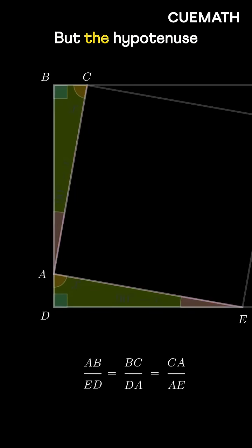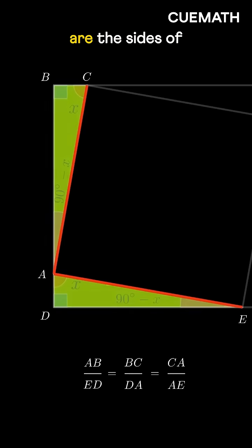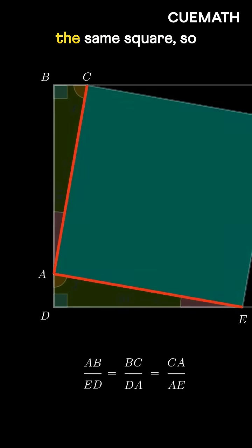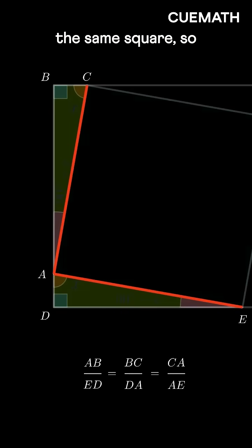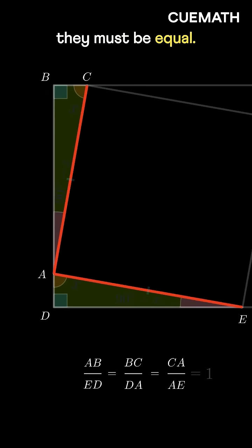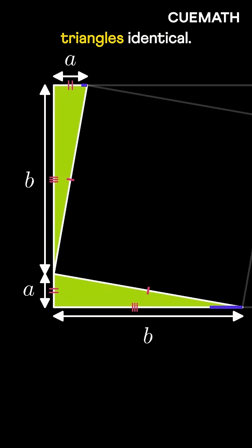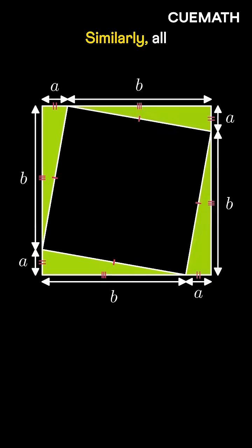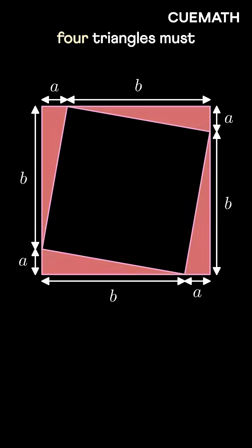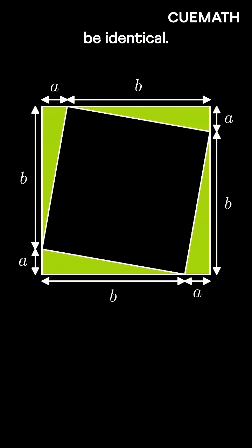But the hypotenuse of both triangles are the sides of the same square, so they must be equal. So the other two sides must also be equal, making the two triangles identical. Similarly, all four triangles must be identical.